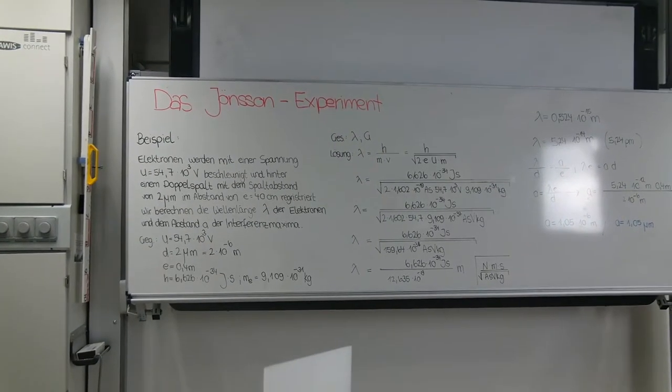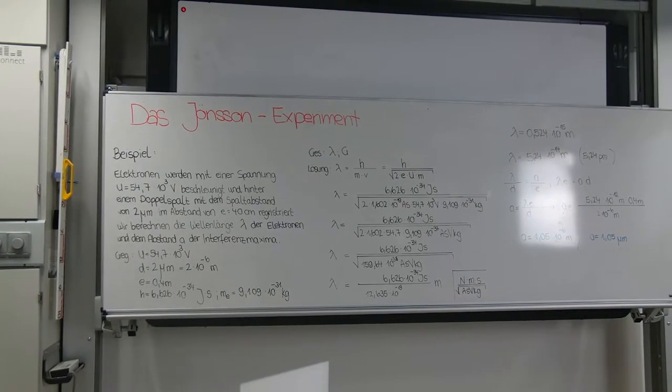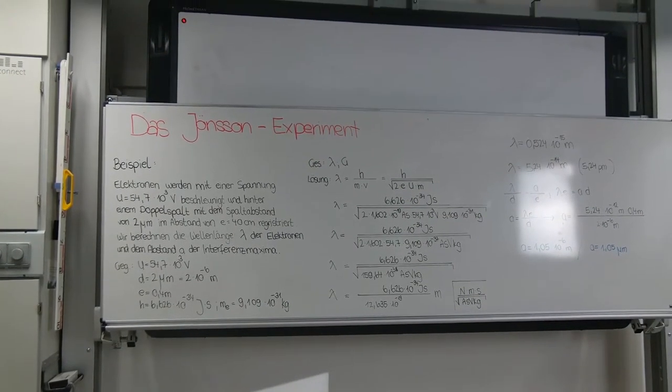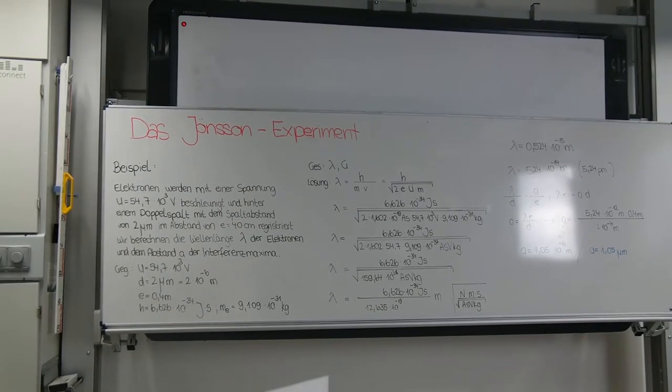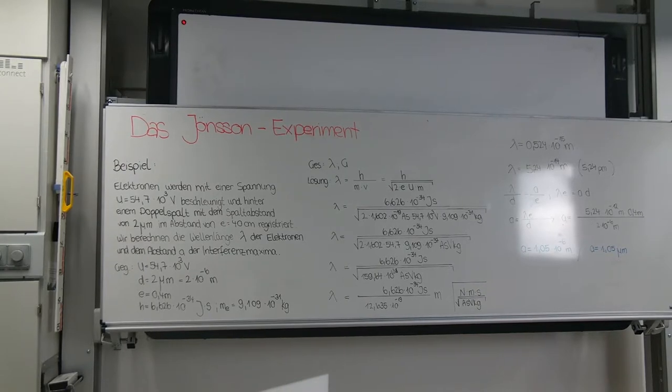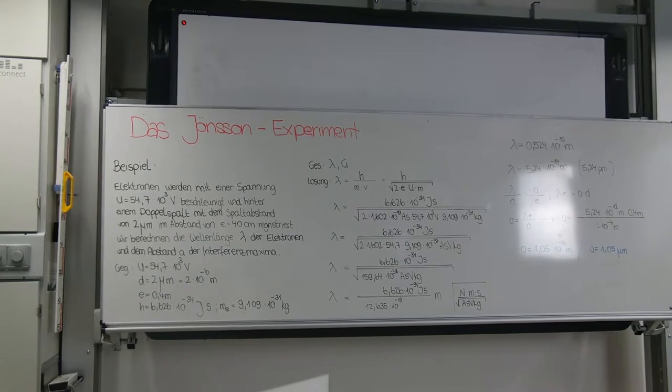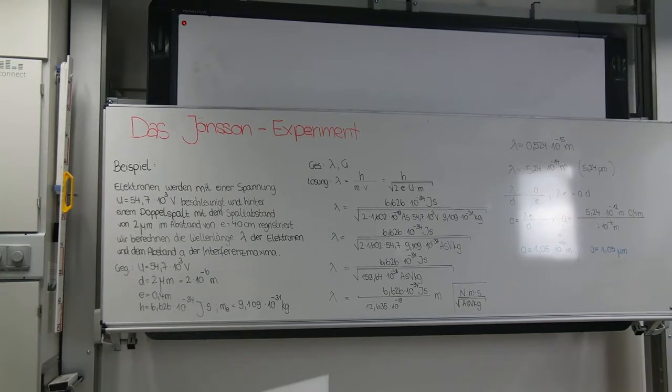The realization of the double-slit experiment with electrons was a great challenge. Because of the short wavelength of electron waves, the double-slit must be very narrow and above all coherently illuminated. The expected interference fringes are also very narrow, so they must be magnified. Jönsson succeeded in 1960 in producing double-slits with a slit width of 0.3 micrometers and a slit spacing of 1 micrometer.